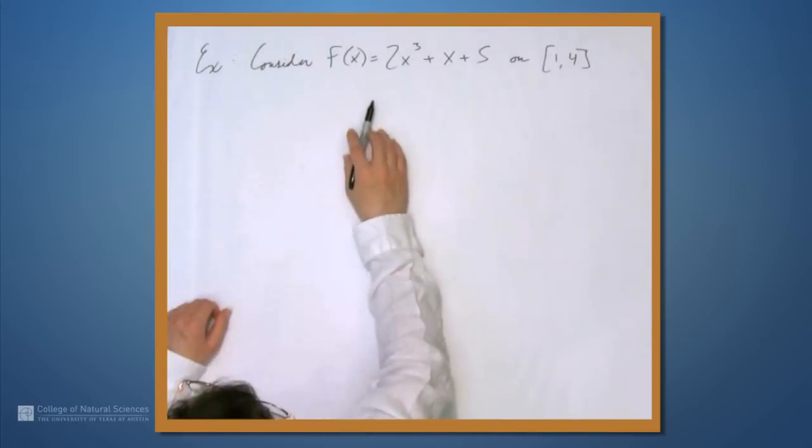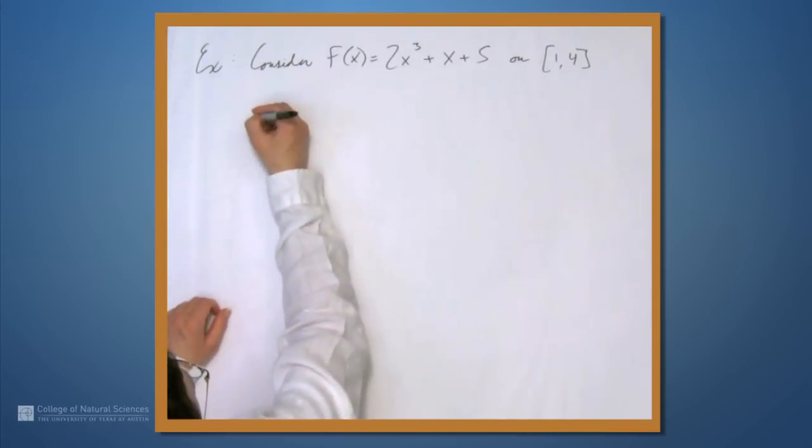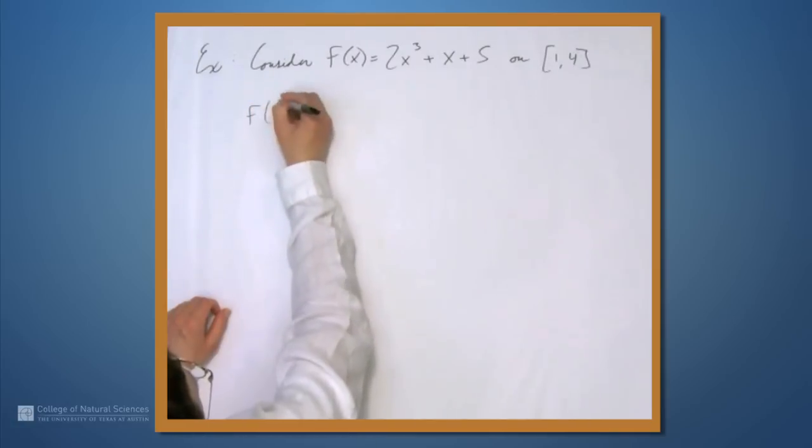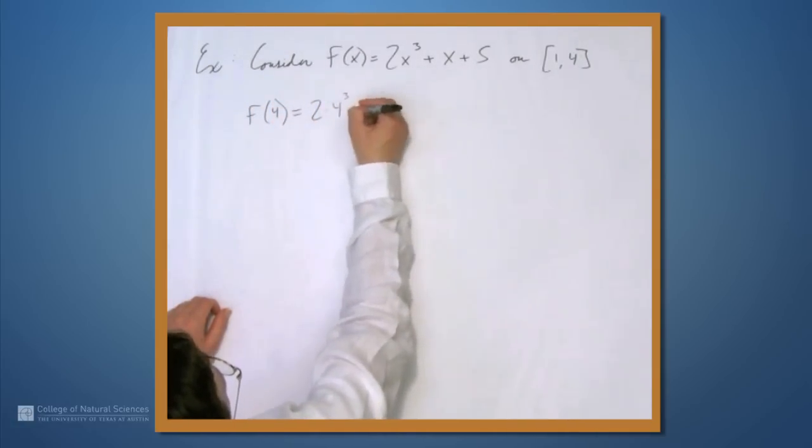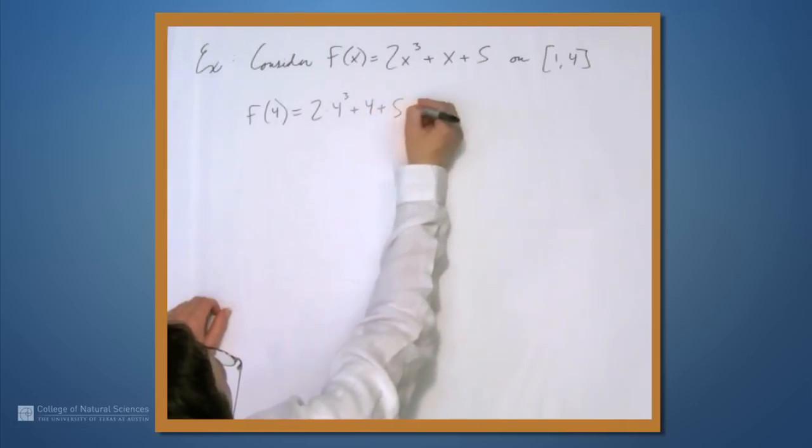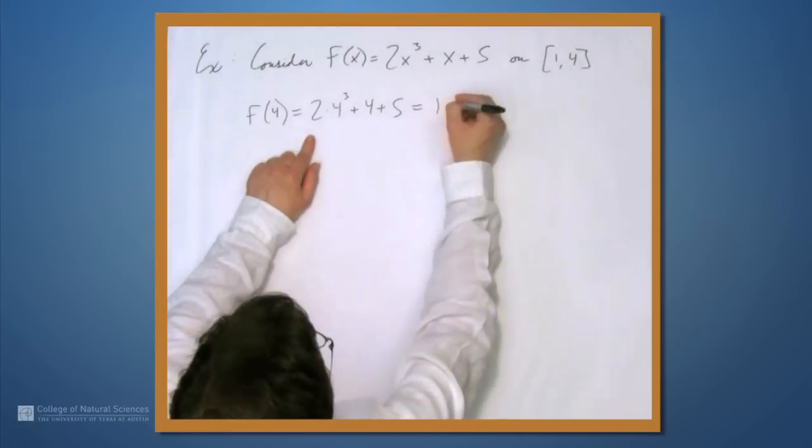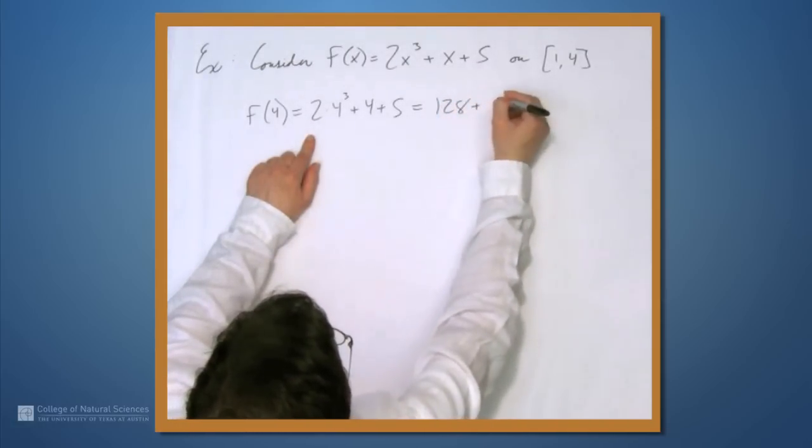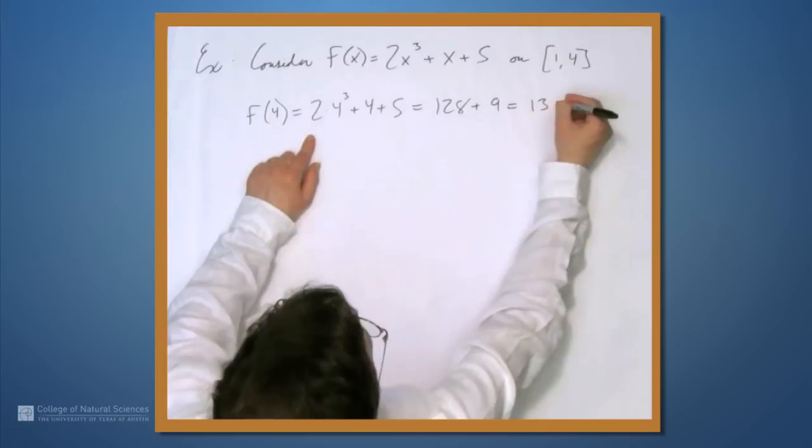So let's find the average rate of change of f on this interval. We'll need f(4) and f(1). So f(4) = 2(4³) + 4 + 5. 4³ is 64, 2 times 64 is 128. So this is 128 + 4 + 5, which equals 9. So this is 137.